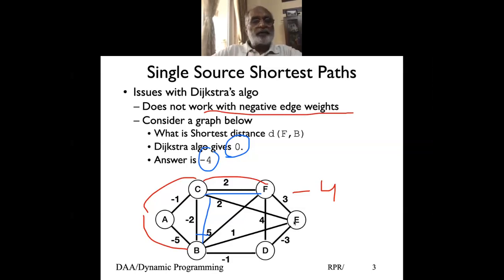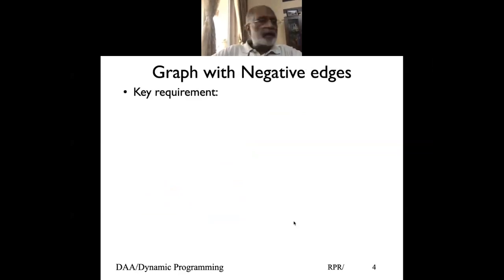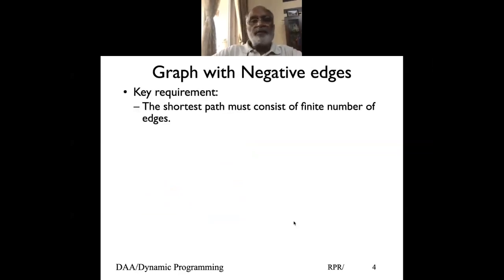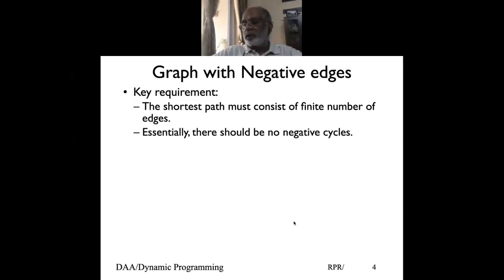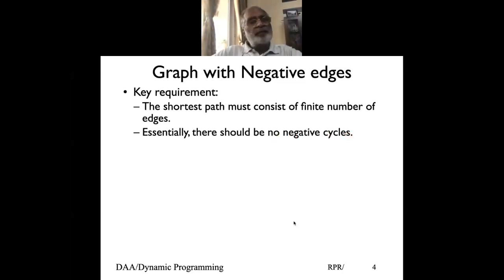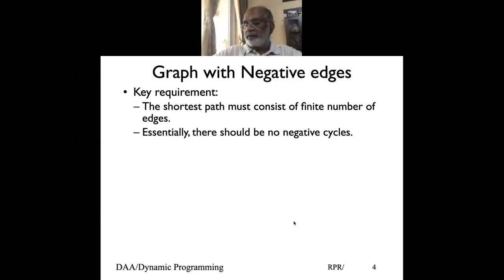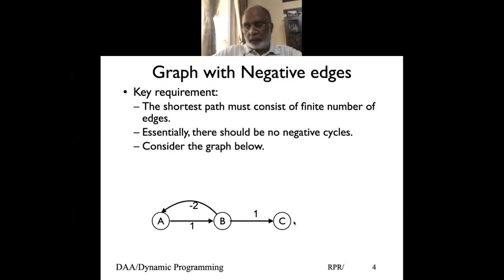So assuming the graph has negative edges, how do you go about finding the shortest distance path? That is the job of the Bellman-Ford algorithm. We are essentially saying that any shortest path should not have any negative cycles, because if there is a negative cycle the distance becomes minus infinity.